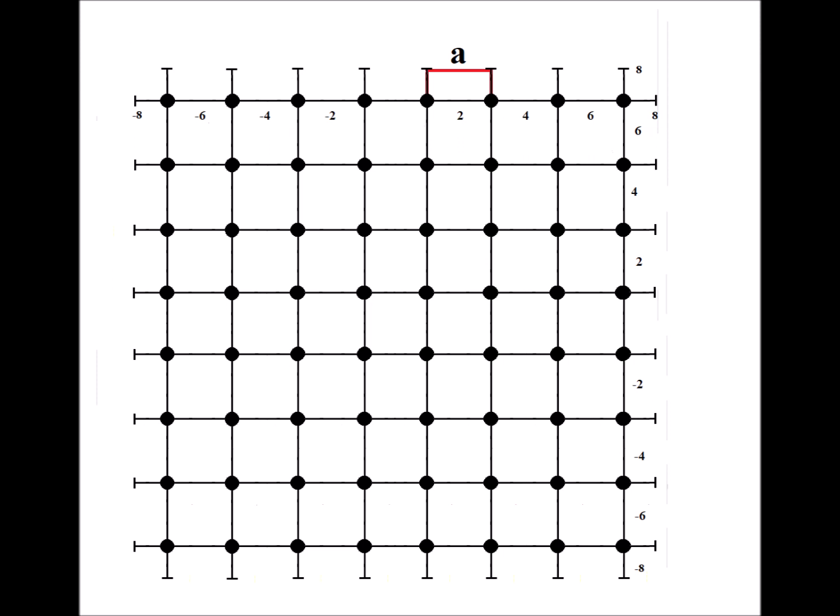Here is our 8x8 square lattice for a total of 64 atoms. The atomic positions are at minus 7, minus 5, minus 3, minus 1, 1, 3, 5, 7, for both the x and y values. The interatomic distance is going to be a in both the x and y directions because we have a square.